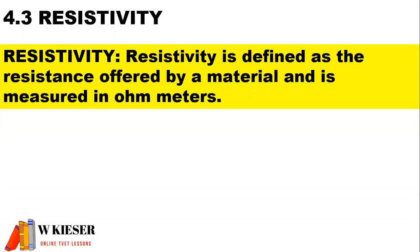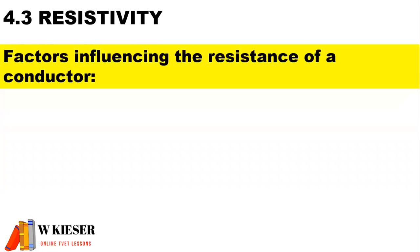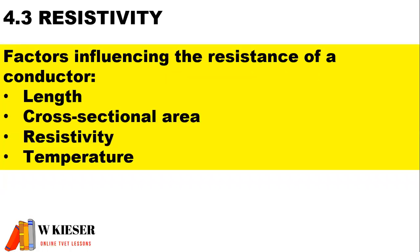Resistivity is defined as the resistance offered by a material and is measured in ohm meters. The factors influencing the resistance of a conductor are the length, cross-sectional area, resistivity, and temperature.